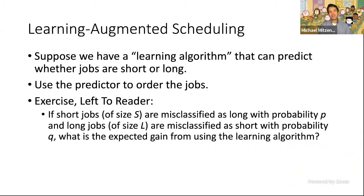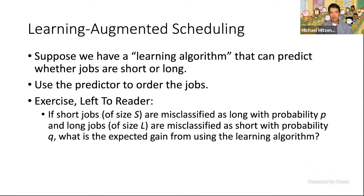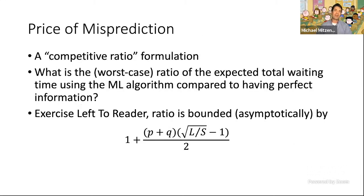Now suppose we had a machine learning algorithm that predicts whether jobs are short or long. Even if there's classification error — I like simple models where short jobs are misclassified with probability P and long jobs with probability Q — you can ask: what can you gain from using the learning algorithm over doing nothing, whether jobs arrive in random or worst-case order? Because the CS community loves 'price of' statements, I call this the 'price of misprediction' — essentially another variation on the competitive ratio.